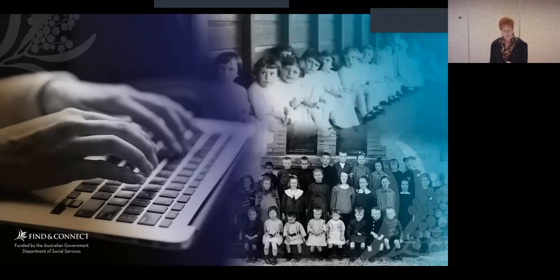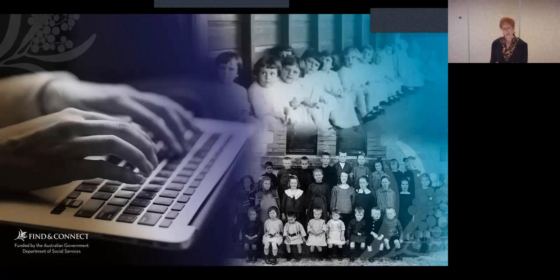We run the website portion of the Find and Connect program. The government also funds various support organizations providing services for people who grew up in out-of-home care. The website provides key information about child welfare in Australia — every child welfare institution going back to 1795, including dates of operation, location, and who ran it. We cover places like orphanages, children's homes, missions, farm schools, and disability institutions. Our primary users are people who grew up in these institutions and the support organizations assisting them.